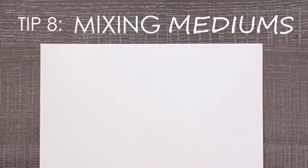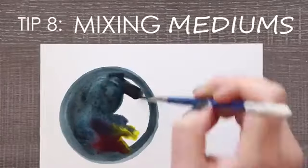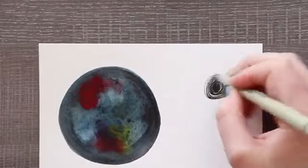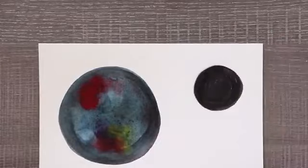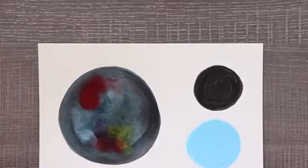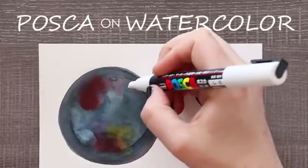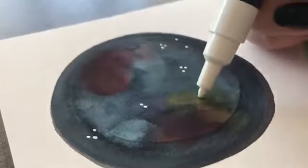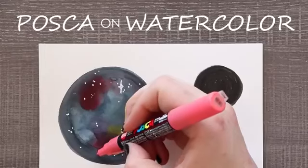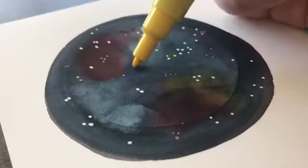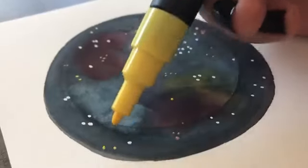Tip number eight is mixing Posca pens with other mediums. Mixing Posca pens with other mediums is easy. They are convenient to add to any piece, be it paint, pencil, or ink. Simply draw on top. I use Posca pens with watercolor drawings if I want to add stars to a space or a little shine of white. Because they come in pen form it makes for a very convenient way to add small details on the fly.